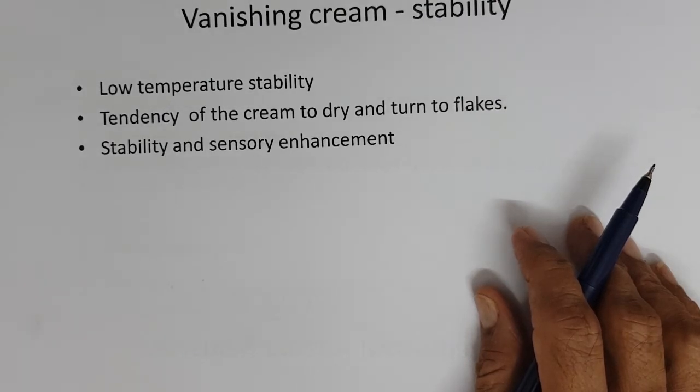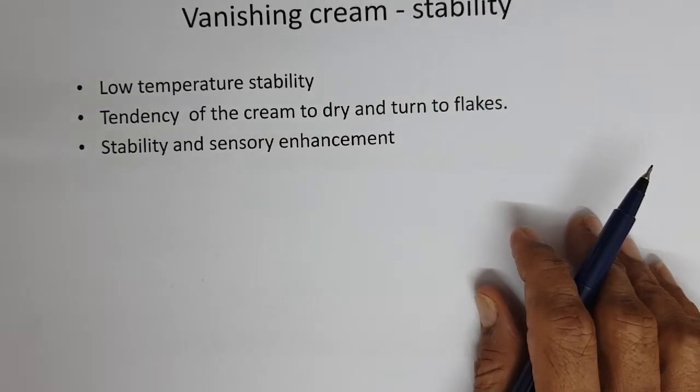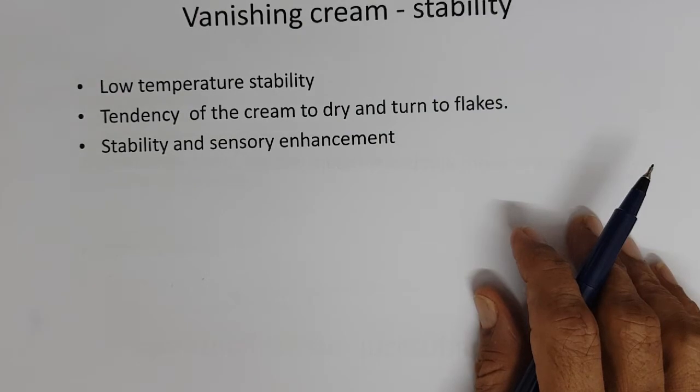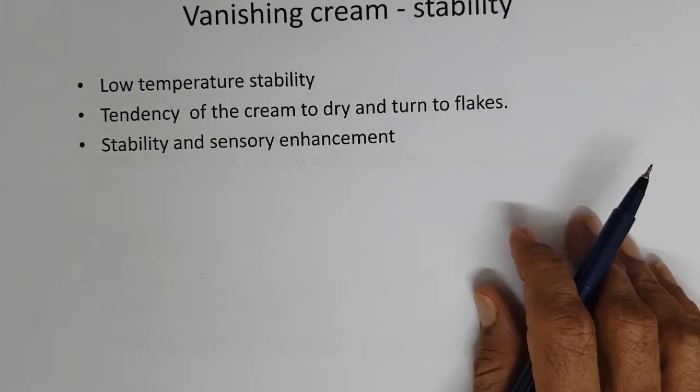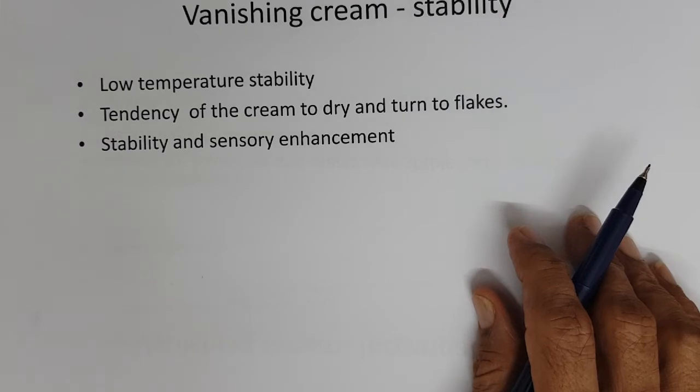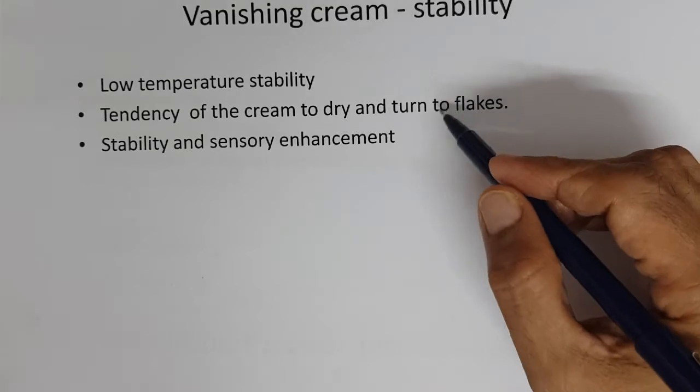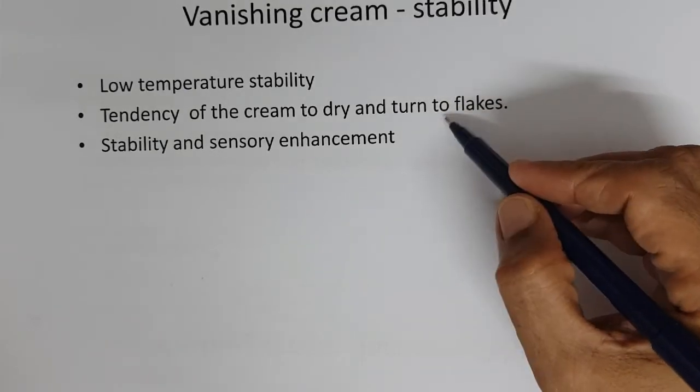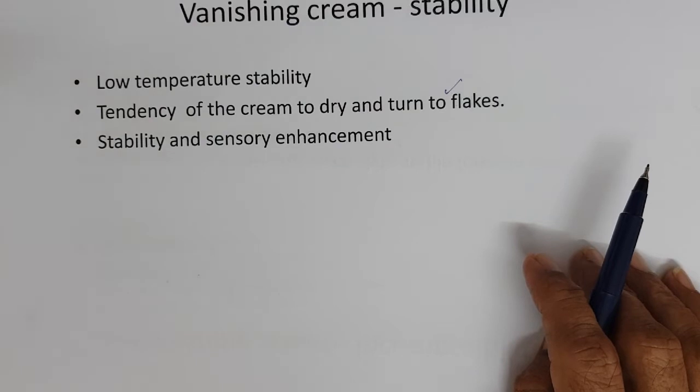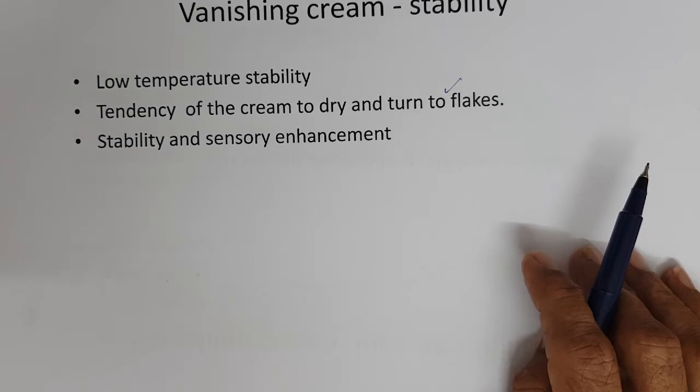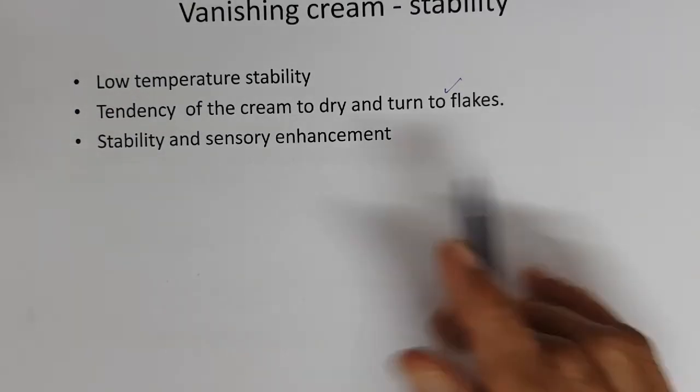When you see this cream, vanishing cream, they are stable at around 40 to 50 degrees. When the temperature of storage is less than 10 degrees, they tend to thin down. This unique cream, when the temperature is very low, the cream starts thinning down. Ideally 40 degrees is very good for this cream, it maintains the consistency very well. Tendency of the cream to dry and turn into flakes. If the container is not properly closed, it can dry out and form flakes, stearic acid flakes.